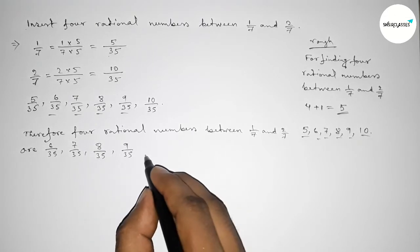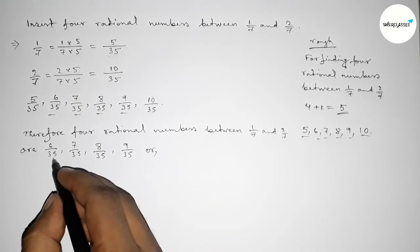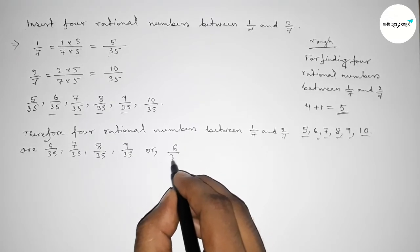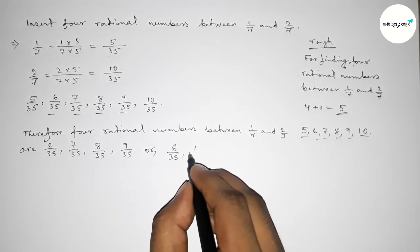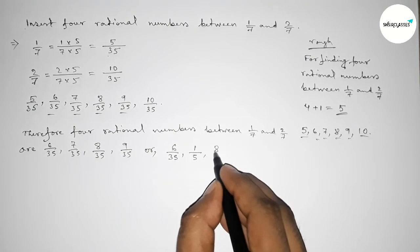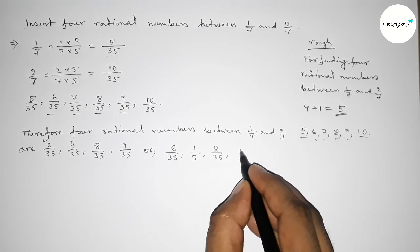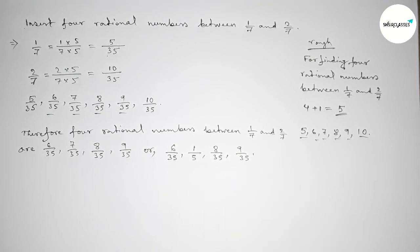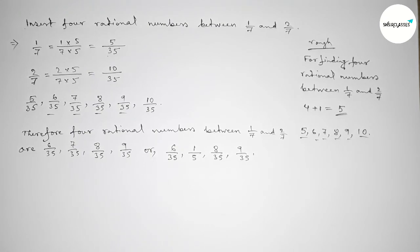Or we can write, this is 6 over 35 and if you divide both numbers by 7, this is 1 over 5, and these are the same. So that's all. Thanks for watching. If this video is helpful to you, then please share it.